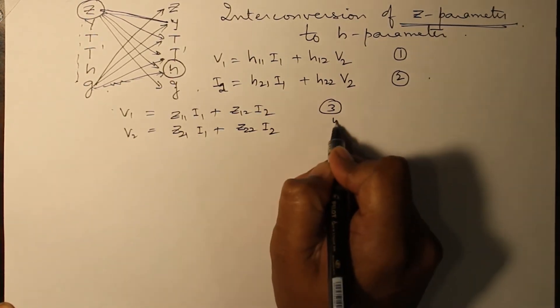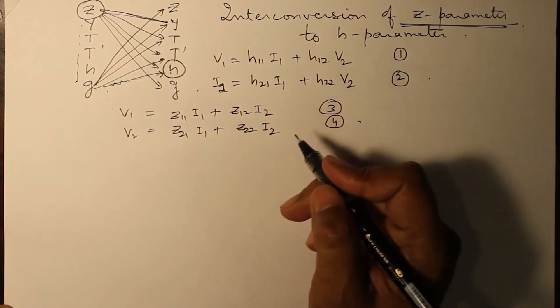What is given is Z parameter. Write down as equation three and four.